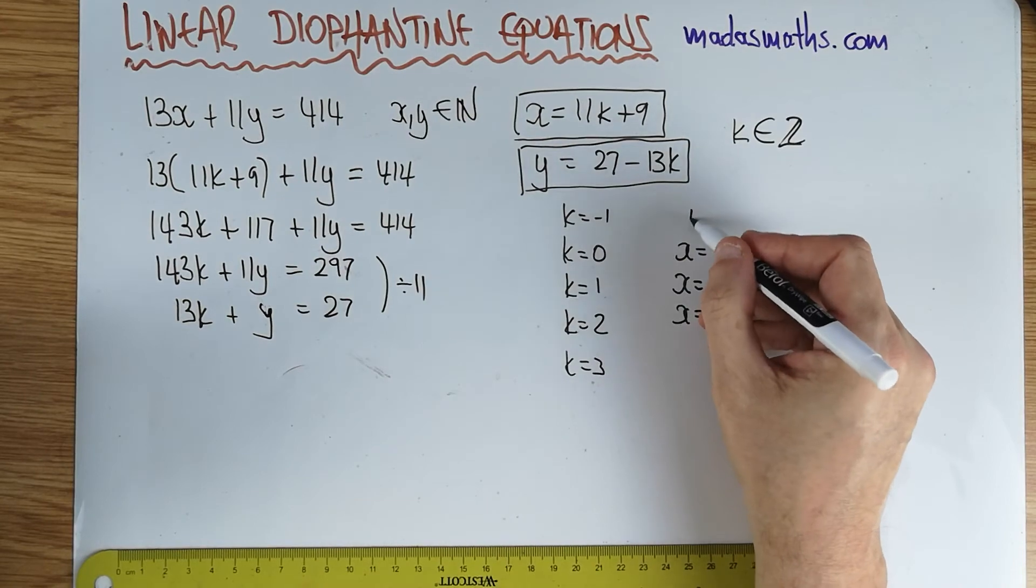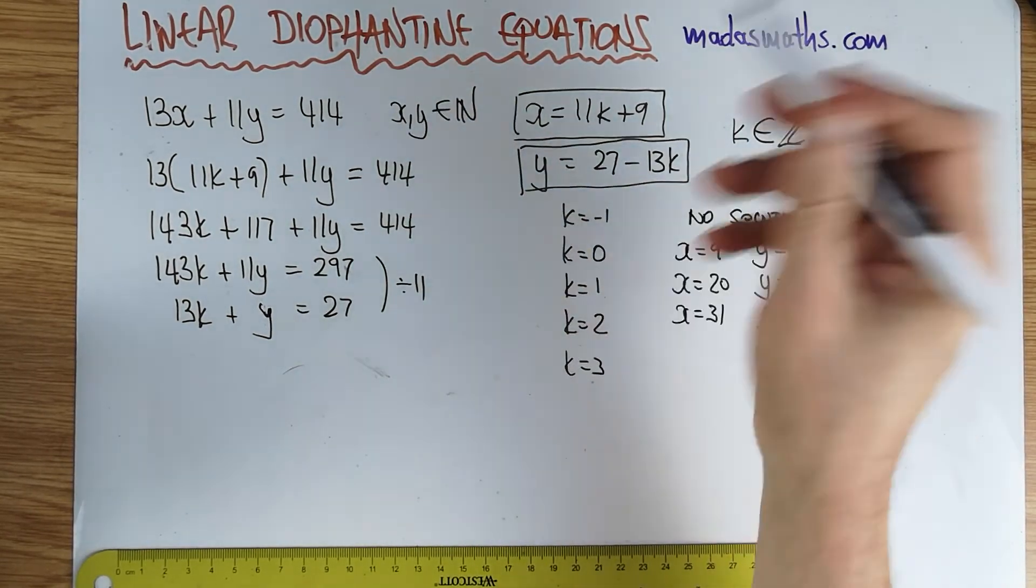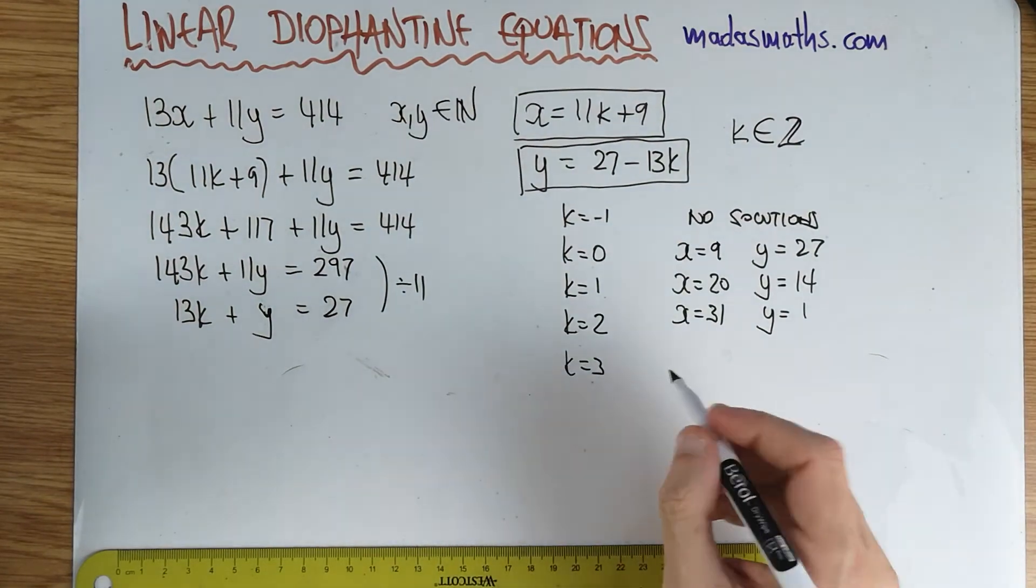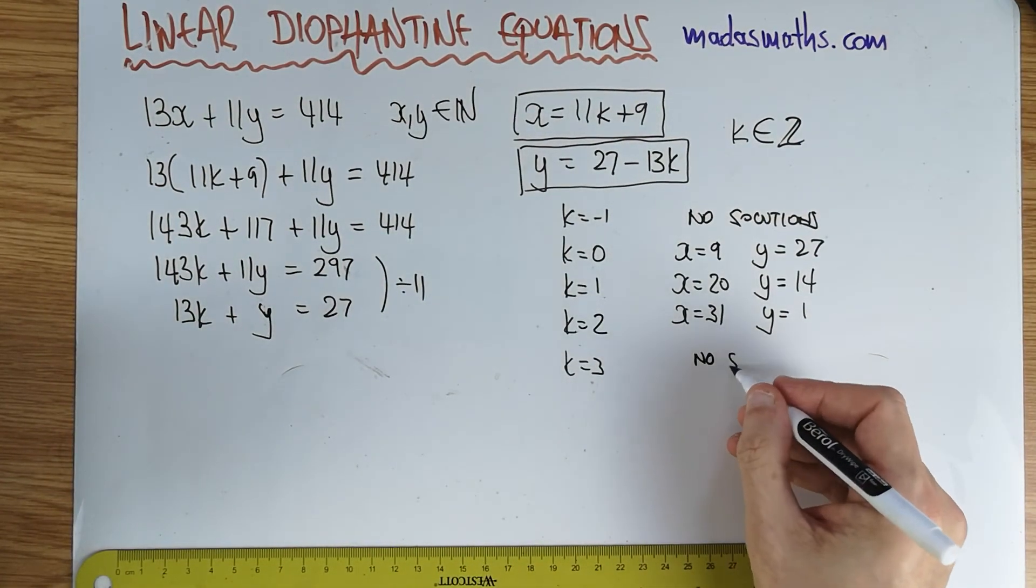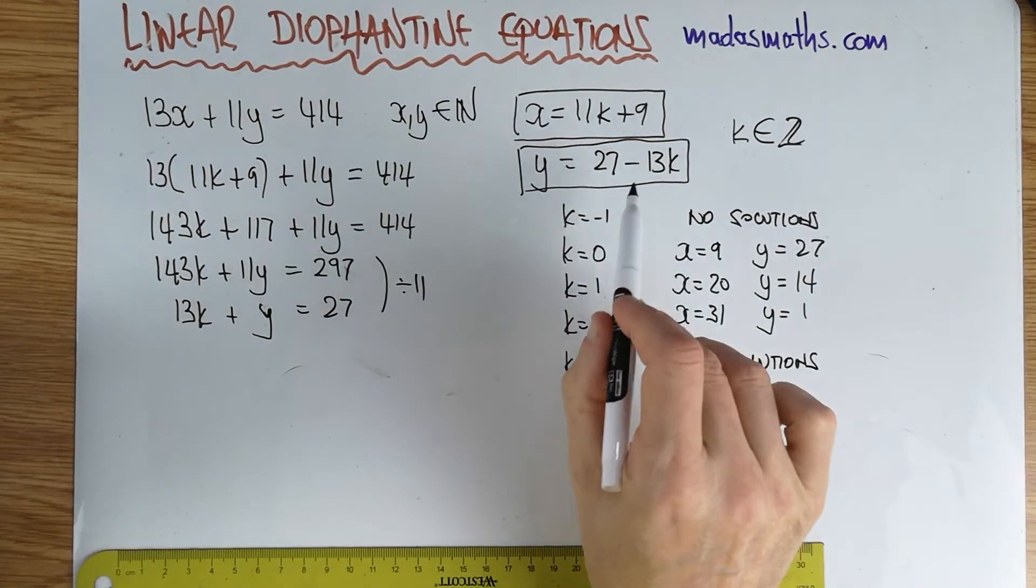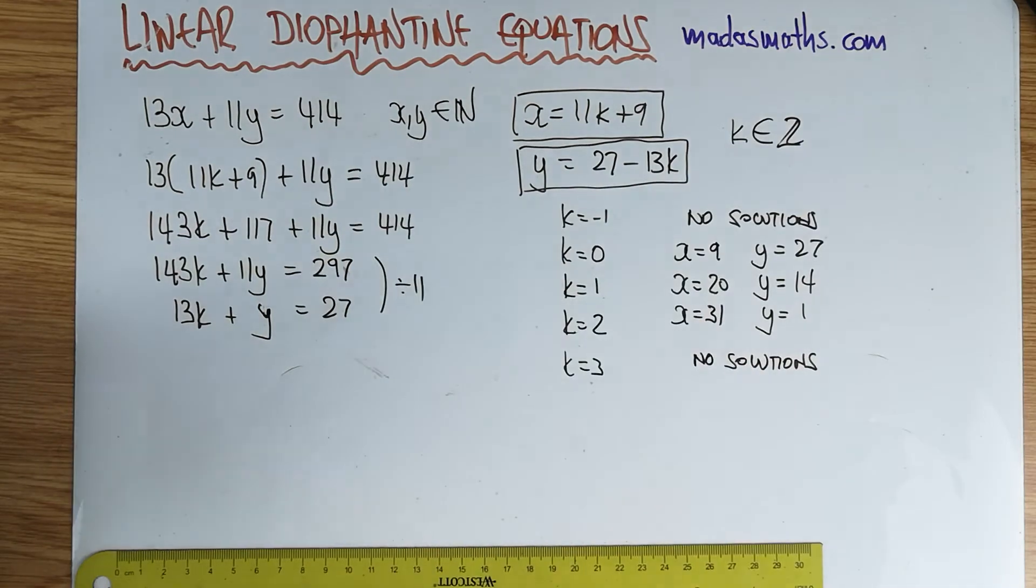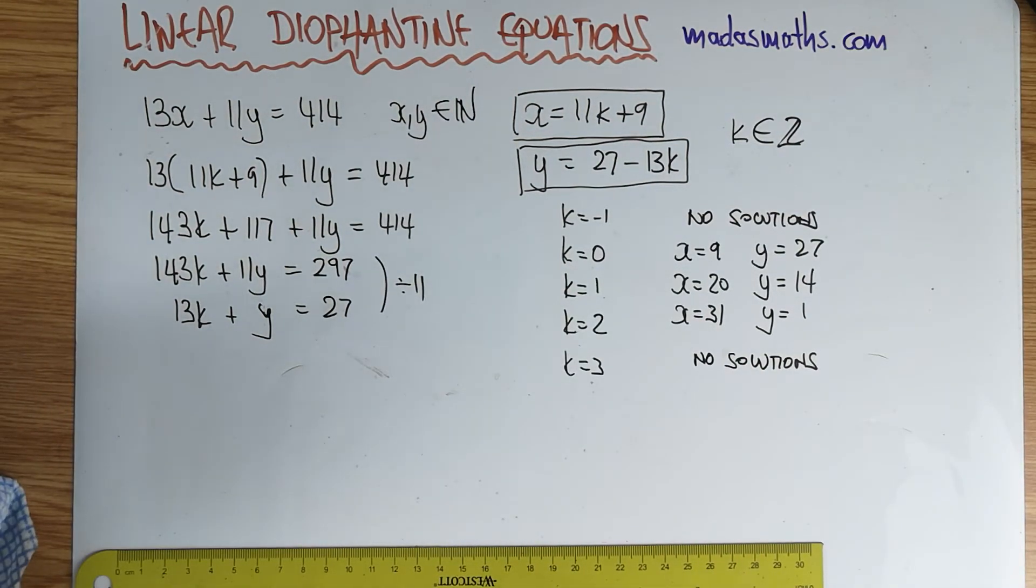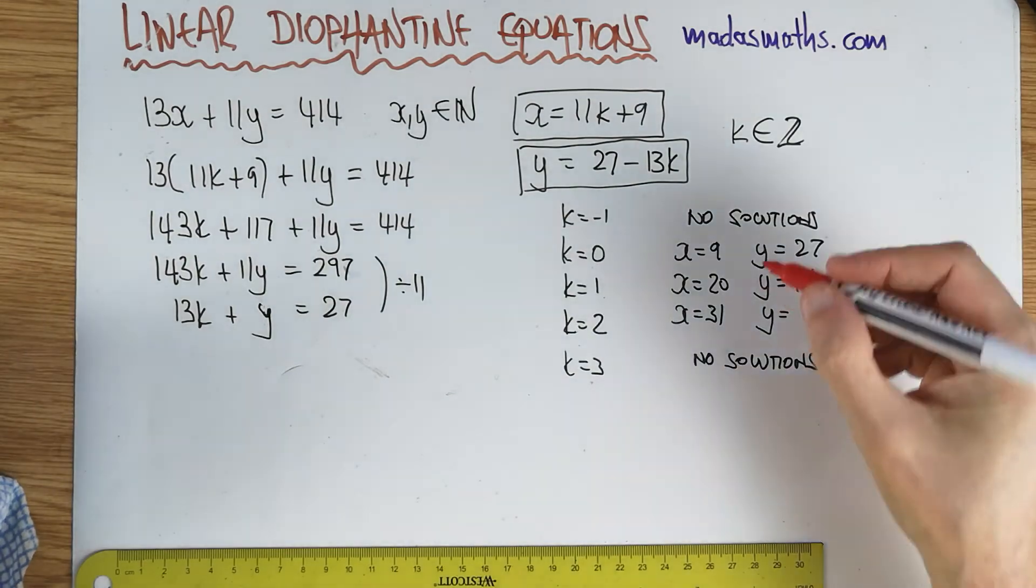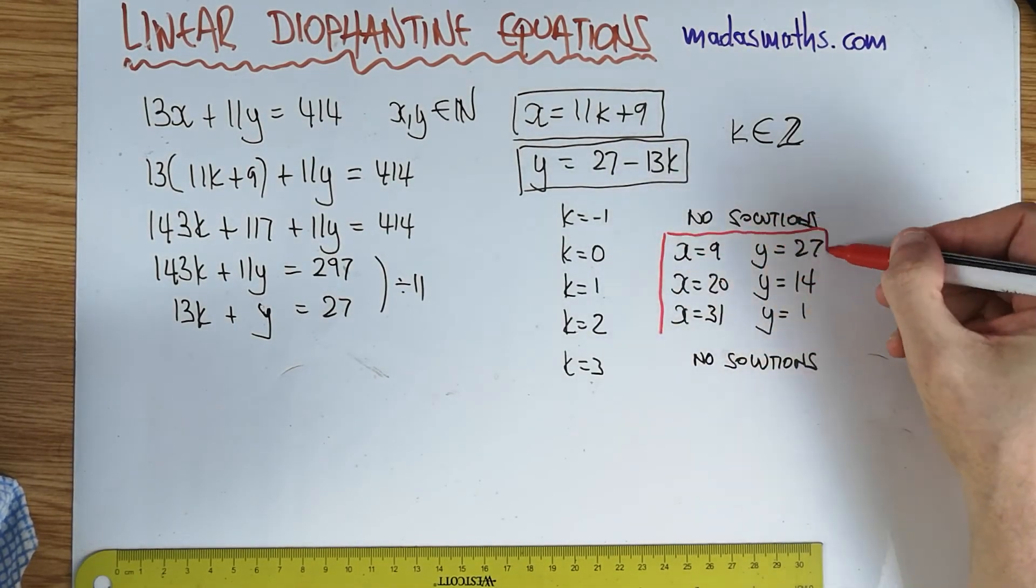I should have put k equals minus 1, no solution. And of course, it gets even worse if you go to minus 2 and so on, and again there's no solutions, because this time the y equation, this will become 39, and I'm going to go in the negatives for the y. So for this particular question, there are three solution pairs for positive integers.